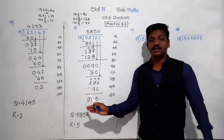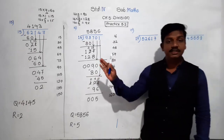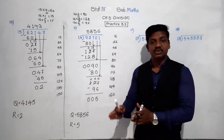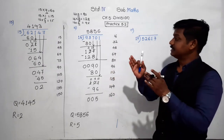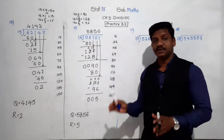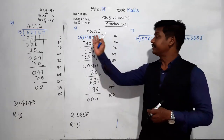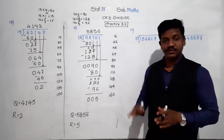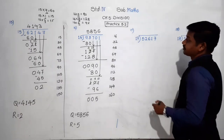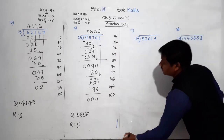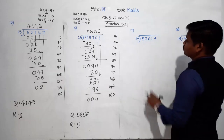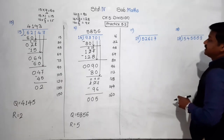If you want to verify your answer, use the division rule: dividend equals divisor multiplied by quotient plus remainder. If you apply this and get the dividend, your answer is correct. Next example: 52,670 divided by 17.